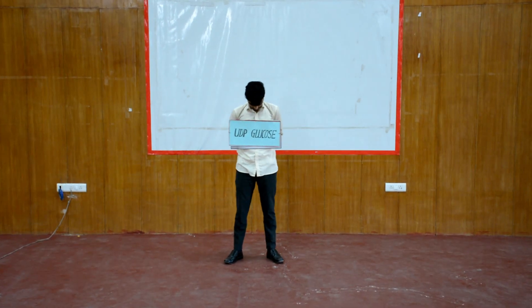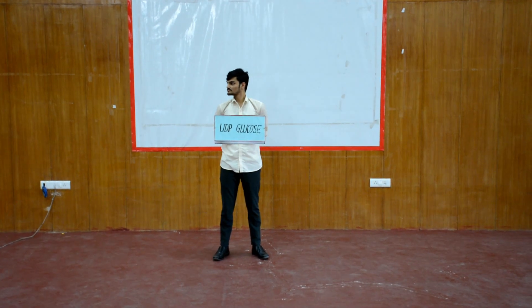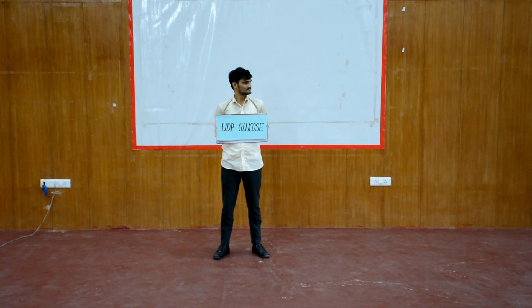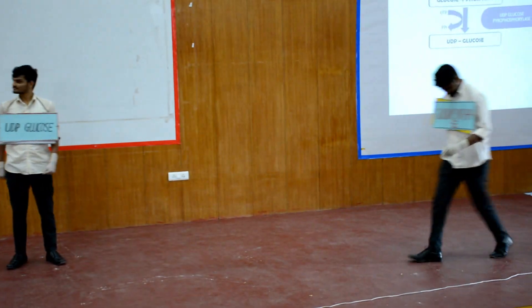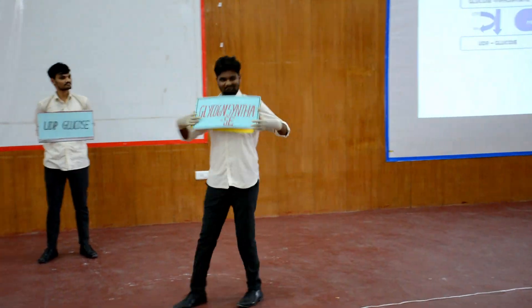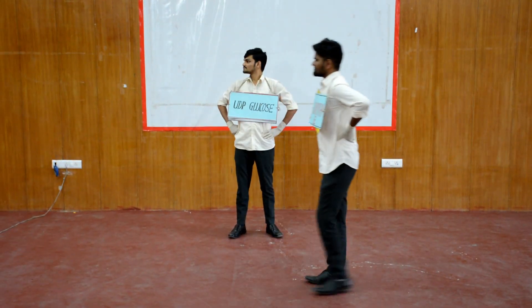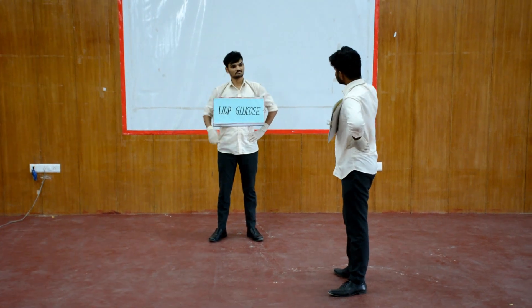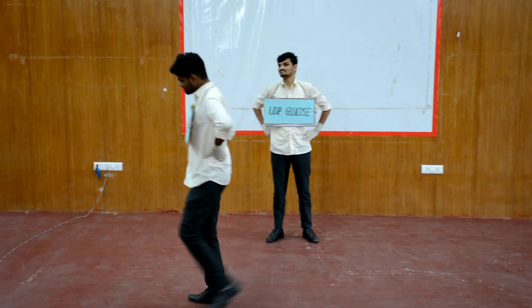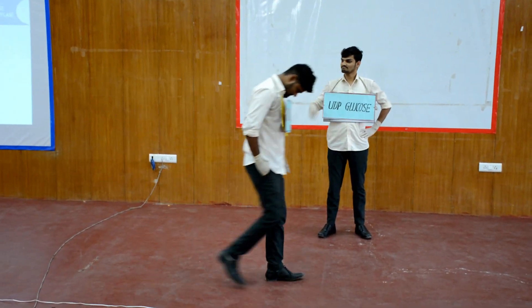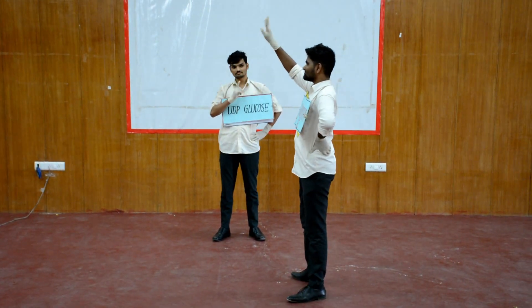Then after this, the real thing starts. The key enzyme of glycogen synthesis is glycogen synthase. Here comes glycogen synthase. But the limitation of this enzyme is it cannot initiate the reaction. The question is, who is going to initiate the reaction? This is the problem we face. But every problem has a solution — who is going to solve this problem?